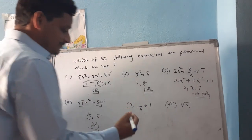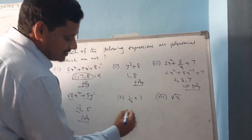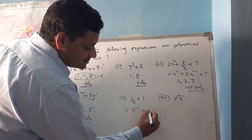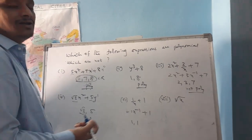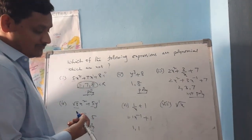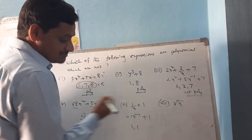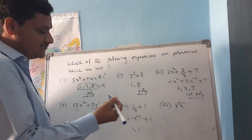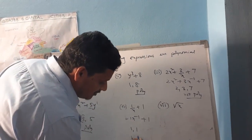For the next expression, 1/(x+1): this can be written with x to the power of −1. The coefficients 1 and 1 are real numbers. However, the power of the variable is −1, which is a negative number. So this fails the polynomial condition and is not a polynomial.